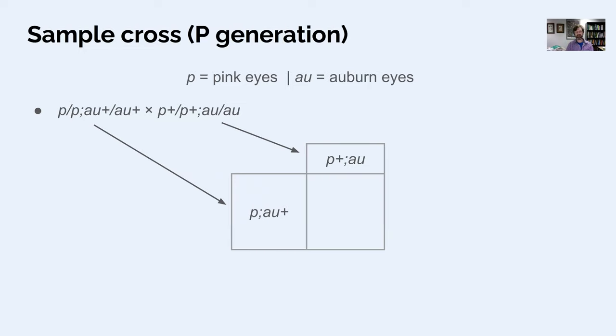So the phenotype, if you're looking at two different eye colors, basically for each gene, if you have at least one plus, that sort of cancels out that phenotype. So the phenotype for the p gene, the genotype is p plus slash p. So there's at least one p plus. That means that they're not pink eyes.